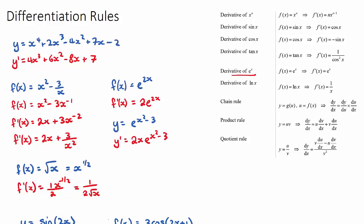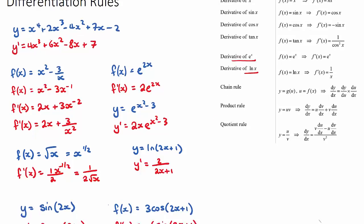To derive natural log functions, take y equals ln(2x plus 1). The rule for ln is: the derivative of the bracket — what's inside — goes on the numerator, and the bracket itself goes on the denominator. The derivative of 2x plus 1 is 2, so y dash equals 2 over (2x plus 1). The final three rules are the chain rule, product rule, and quotient rule.